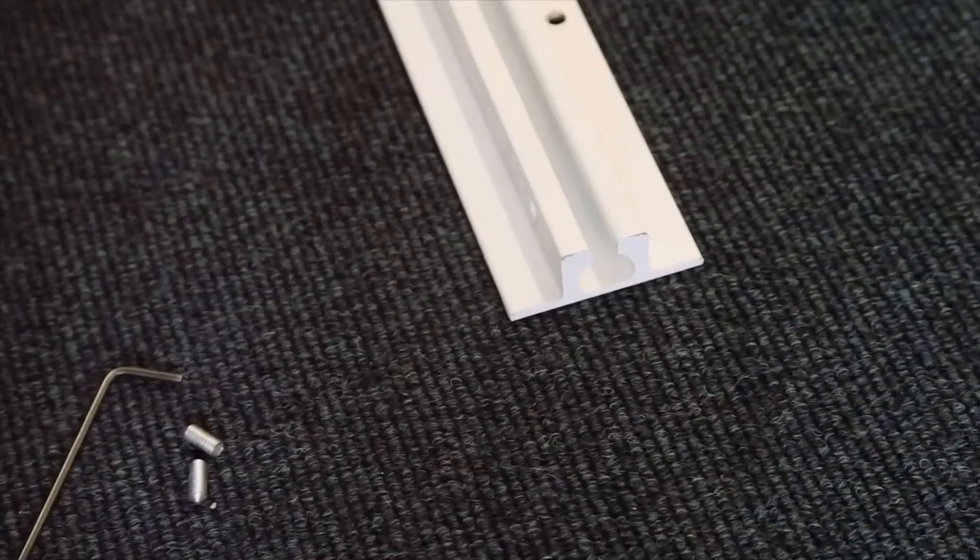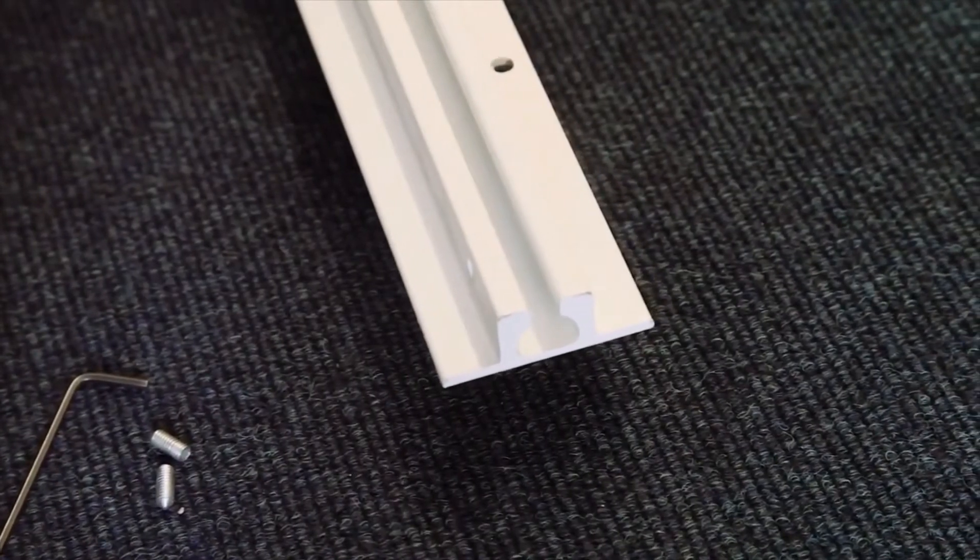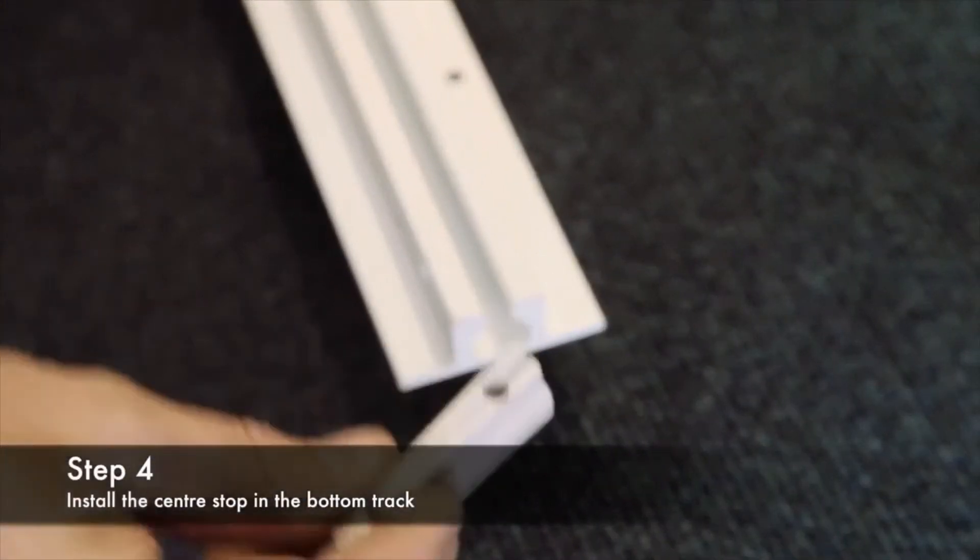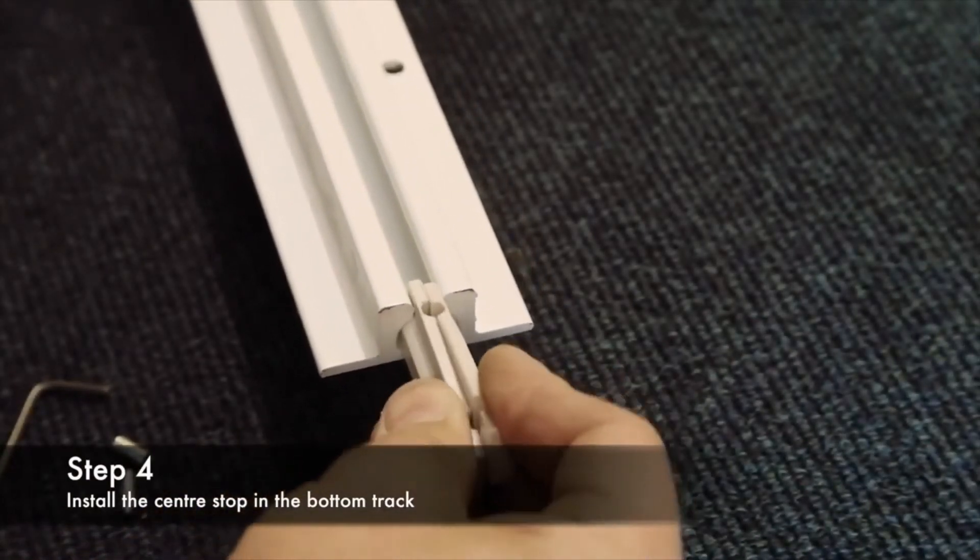If you're installing a double grille, it's at this stage before you've put the lattice work in, you want to install this centre stop. Just slide it in to the end of the bottom track.